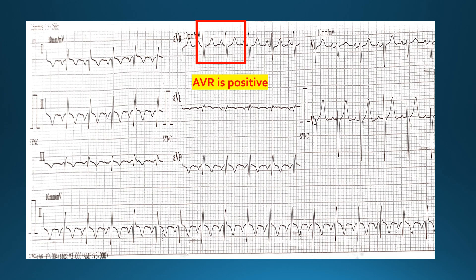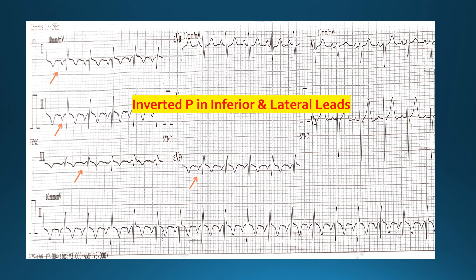First of all, the aVR lead is positive in this case. We can see that the P wave is positive, the T wave is positive, and the QRS complex is almost equiphasic. But in a normal sinus rhythm, all of these should be negative in aVR. So these findings being positive — does this mean something? Let's discuss some other findings before reaching a conclusion.